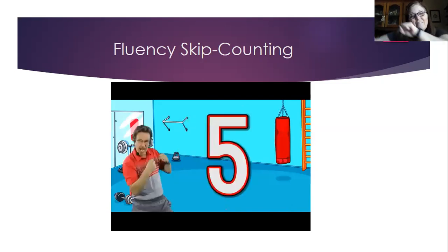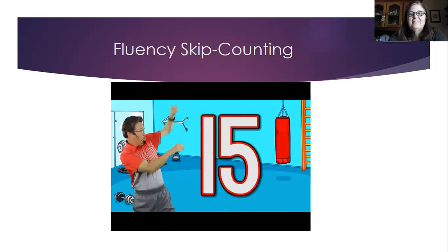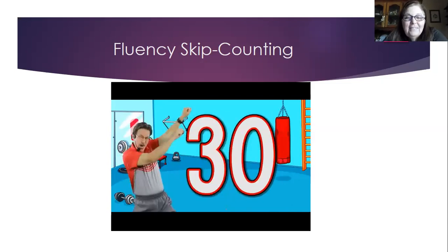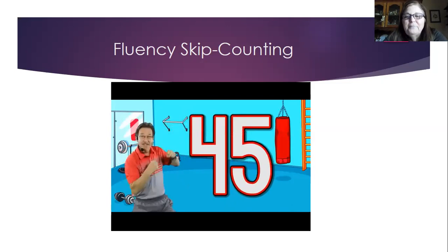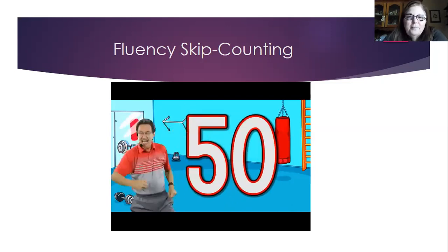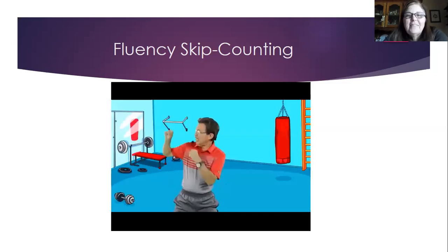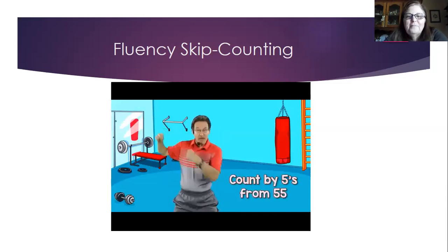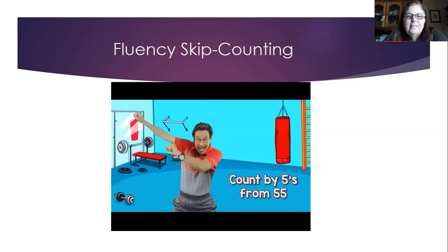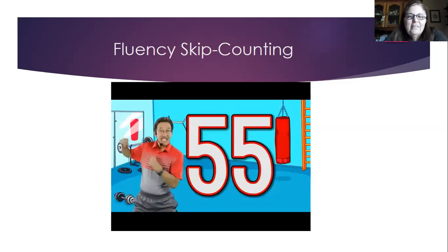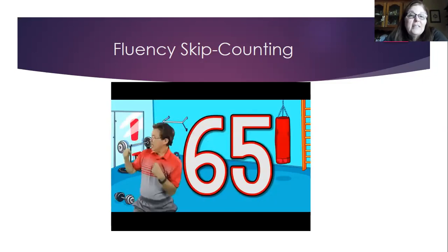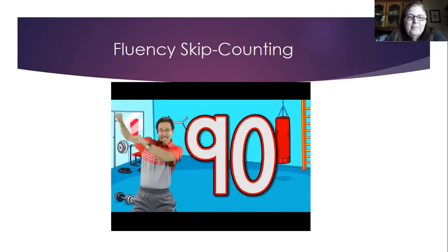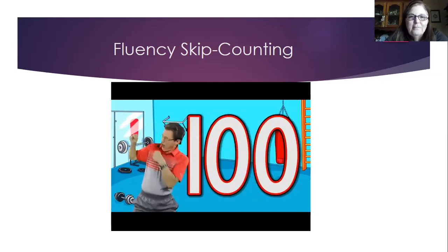Five, ten, fifteen, twenty, twenty-five, thirty, thirty-five, forty, forty-five, fifty. Legs, stretch out, arms right now. Count by fives from fifty-five — workout and count. Fifty-five, sixty, sixty-five, seventy, seventy-five, eighty, eighty-five, ninety, ninety-five, one hundred.